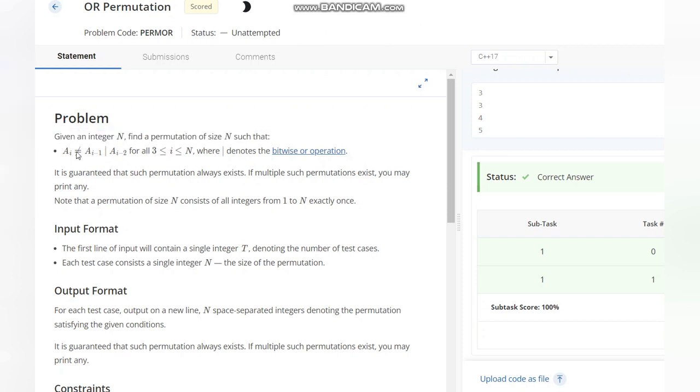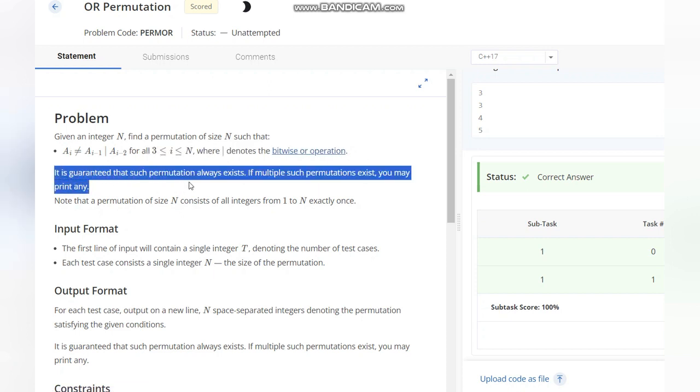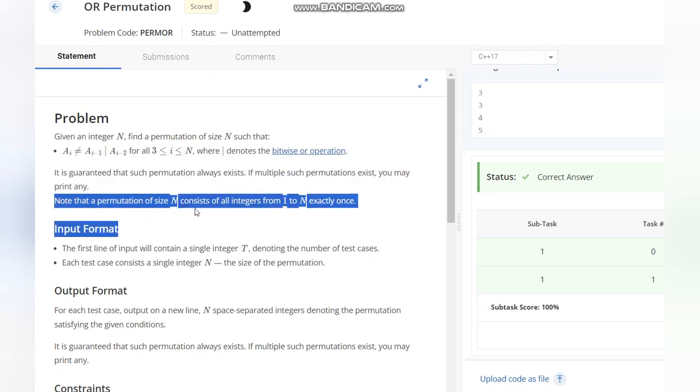Such that a_i is not equal to a_(i-1) OR a_(i-2) for all i belongs to 3 to n, where this denotes the bitwise OR operation. It is guaranteed that such permutation always exists. If multiple such permutations exist, you may print any. Note that permutation of size n consists of all integers 1 to n exactly once.